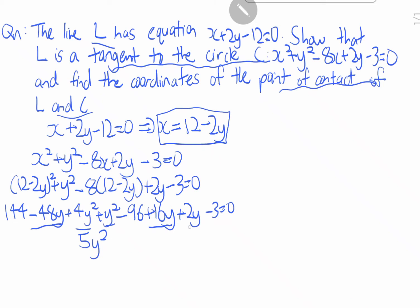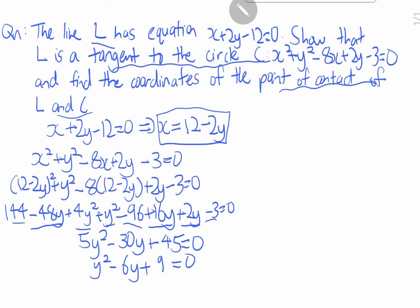Continuing with the y terms: negative 32y plus 2y equals negative 30y. For the constants: 144 minus 96 equals 48, and 48 minus 3 equals 45. So we have 5y² minus 30y plus 45 equals zero, which simplifies to y² minus 6y plus 9 equals zero.